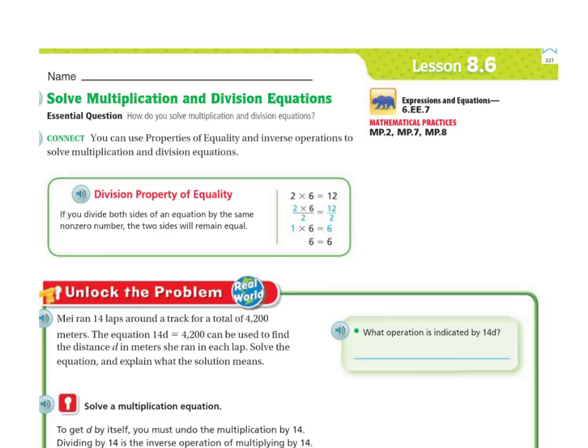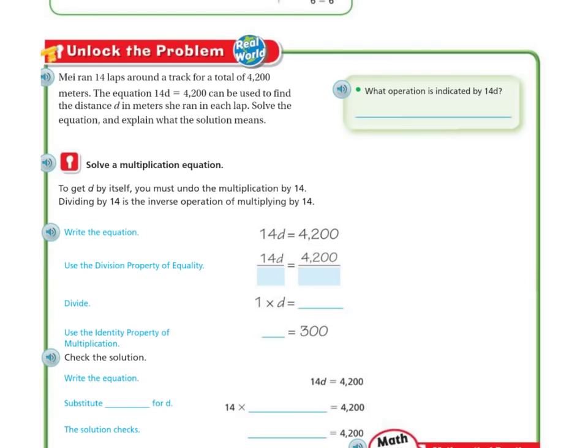Let's unlock the problem. Mia ran 14 laps around the track for a total of 4,200 meters. The equation 14D equals 4,200 can be used to find the distance D in meters that she ran in each lap. Solve the equation and explain what the solution means. First, what operation is indicated by 14D?